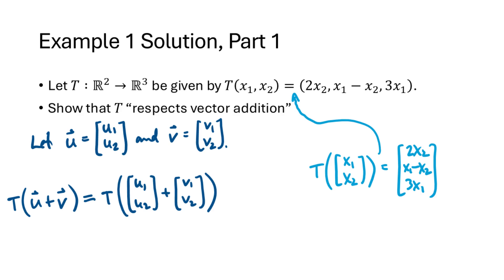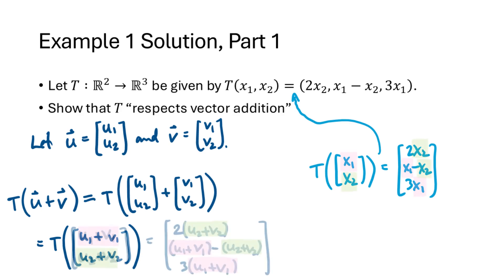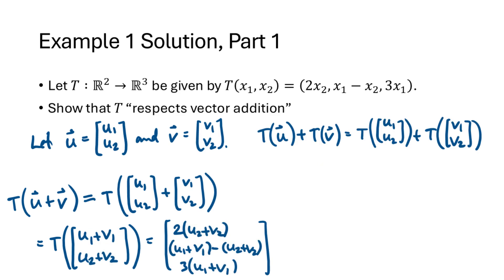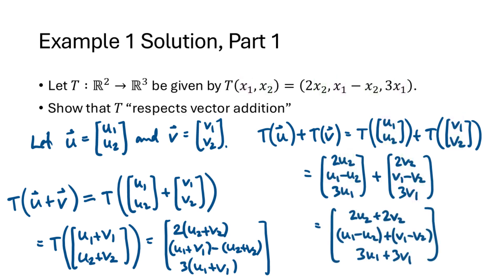Let u = (u1, u2) and v = (v1, v2). We work out T(u + v) by adding the vectors first to get T(u1 + v1, u2 + v2), then applying the formula — replacing x1 with u1 + v1 and x2 with u2 + v2. We also separately compute T(u) + T(v) using the definition of our function, getting two vectors that we then add together. The goal is to show these two resulting vectors are the same.